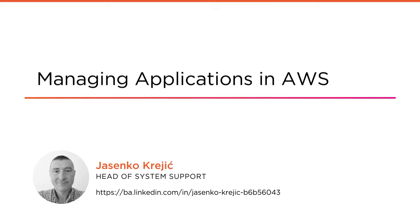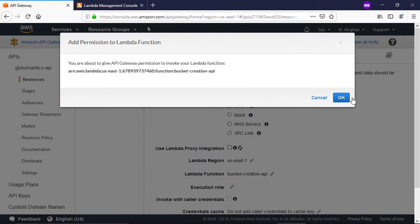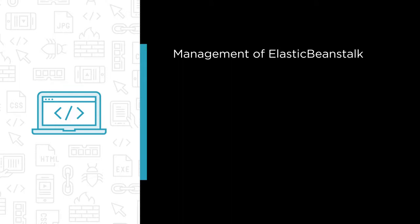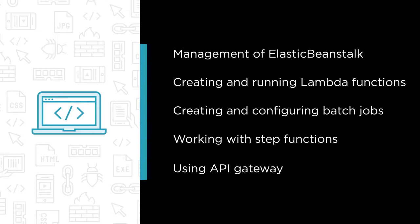In this course you are going to learn five technologies that are part of the amazing new thing the whole IT world is talking about — the serverless. Some of the major topics that we will cover include complete management of Amazon Elastic Beanstalk, creating and running Lambda functions, creating and configuring Amazon Batch jobs, working with Amazon Step Functions, and using Amazon API Gateway.